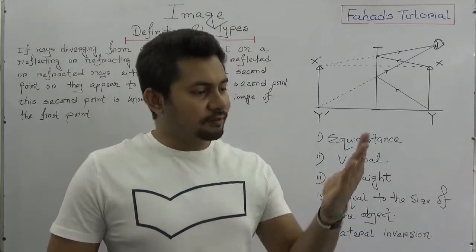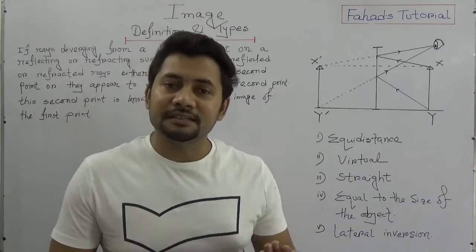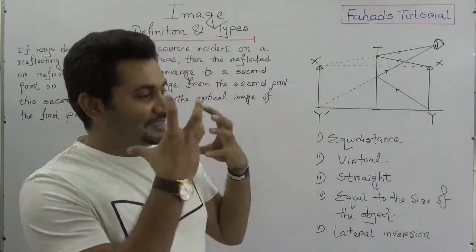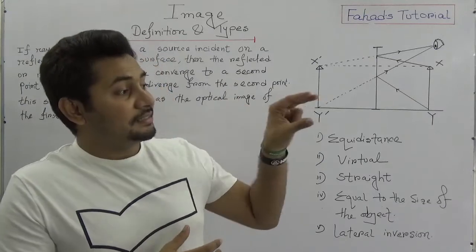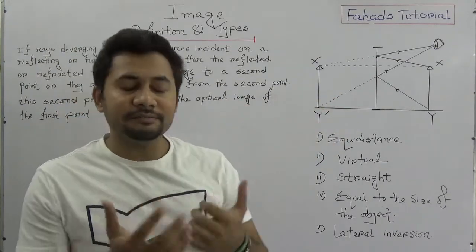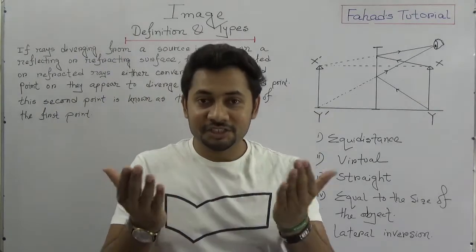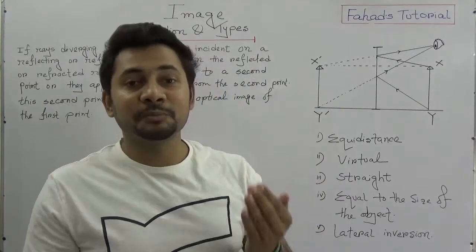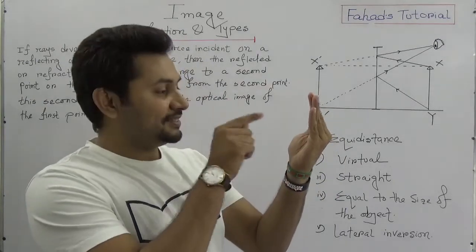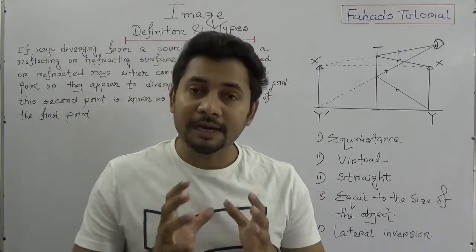If we stand in front of a mirror, what do we see? We see ourselves — that is our image. Even if we stand in front of something polished, like a metal spoon, we can also see that an image is formed. So why does this happen?